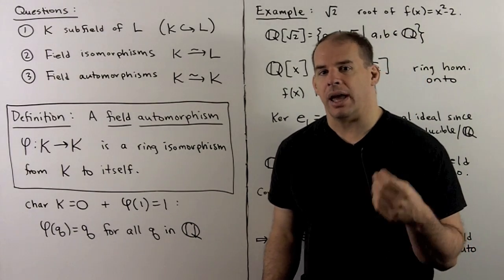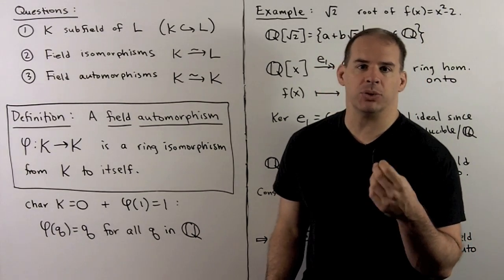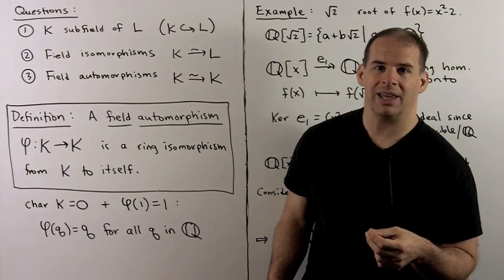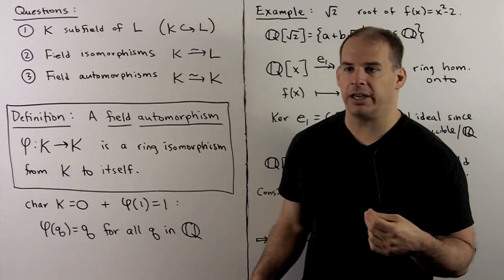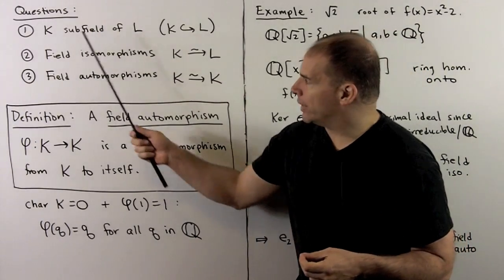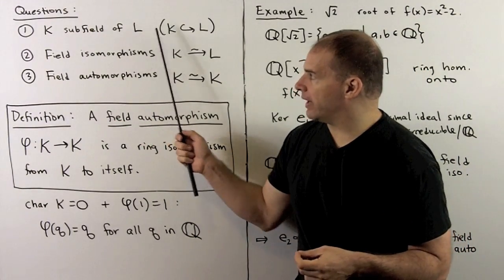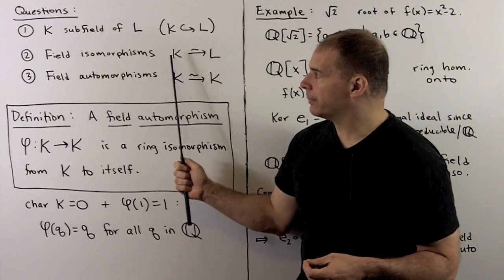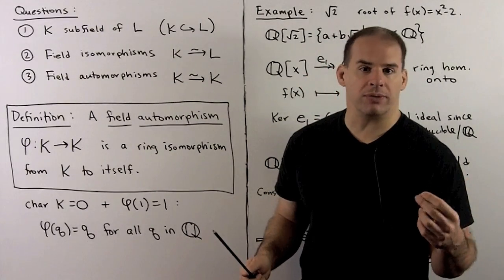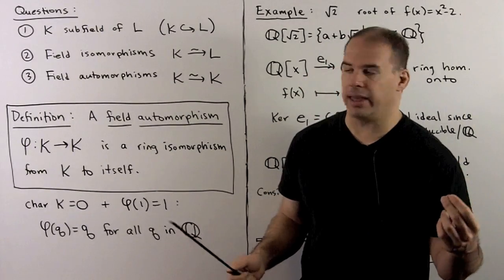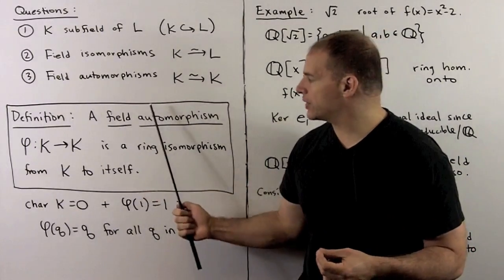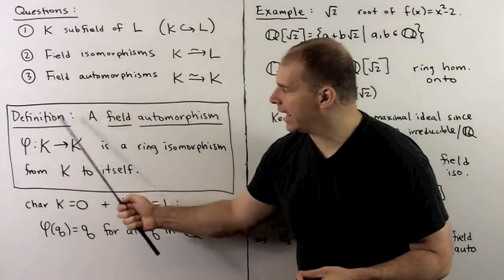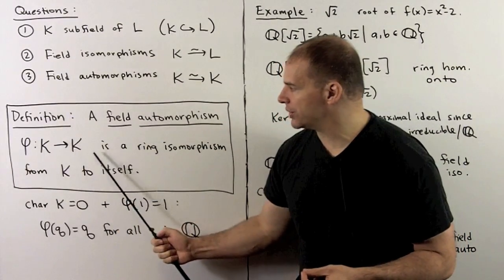With that, any homomorphism between fields is essentially an inclusion. That leads us to ask: when is k a subfield of L? When are k and L isomorphic? And what are the field automorphisms on k? A field automorphism is just a ring isomorphism phi carrying k back into itself.